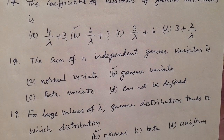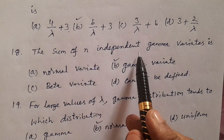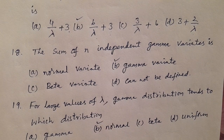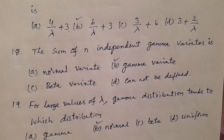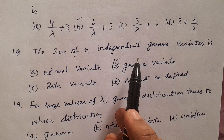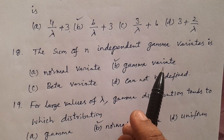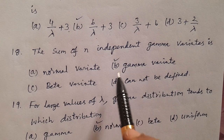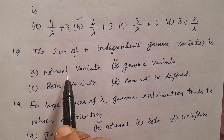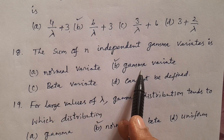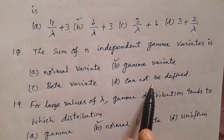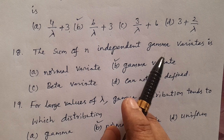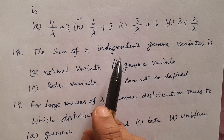Question number 18: The sum of n independent gamma variates is — this is about the additive property. Does gamma distribution satisfy additive property? Yes, it does. Options: A) Normal variate, B) Gamma variate, C) Beta, D) Cannot be defined. The answer is B — gamma variate, because gamma distribution satisfies the additive property.